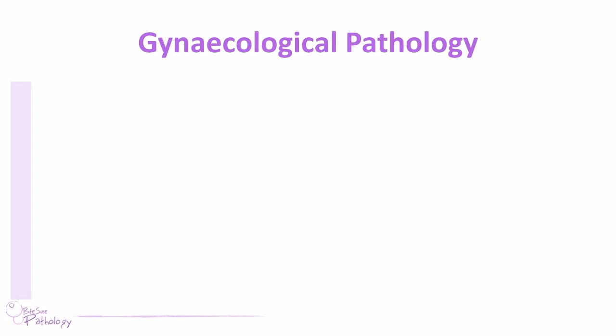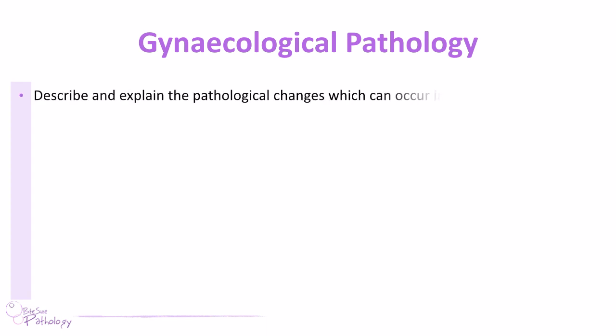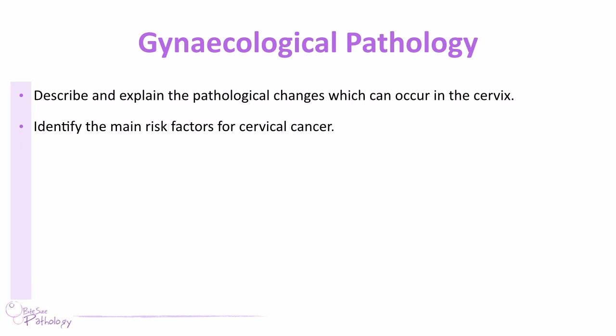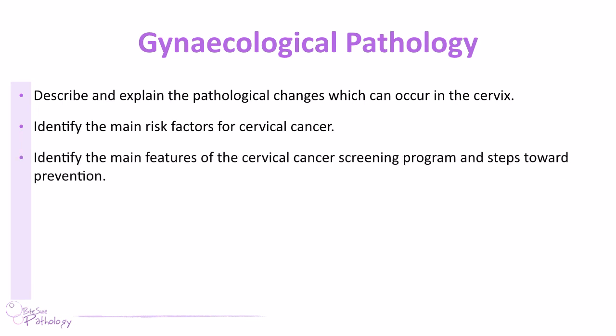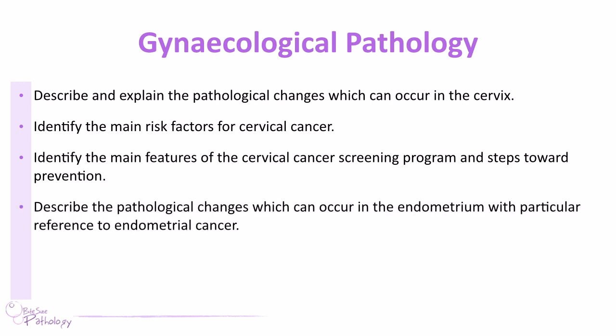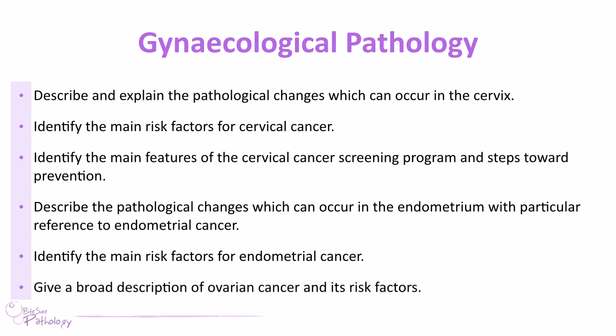So what have we covered in this tutorial? We've described and explained the pathological changes that occur in the cervix, talked about risk factors for cervical cancer, and identified the main features of the cervical screening programme. We've also touched on endometrial cancer and its risk factors, and talked about the various different types of ovarian tumour and how you might classify them.